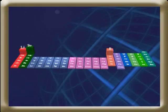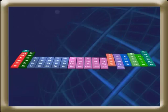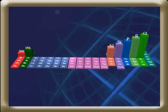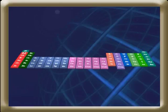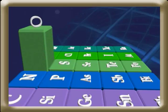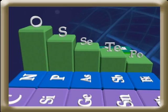In a period, as we move from left to right, atomic size decreases, thus causing an increase in electronegativity. In a group, atomic size increases, thus causing a decrease in electronegativity.